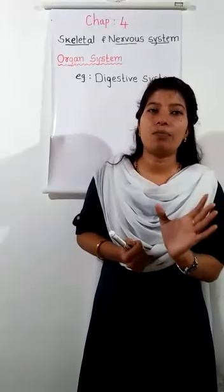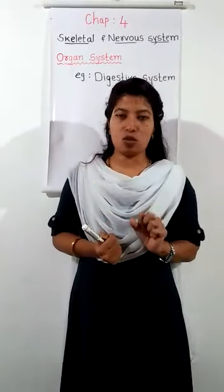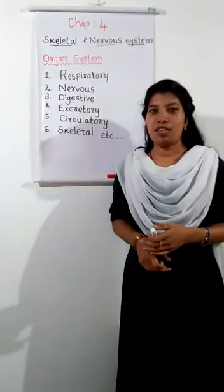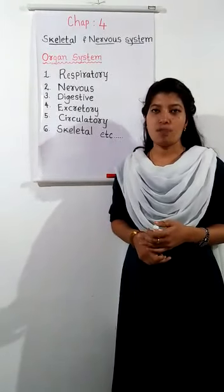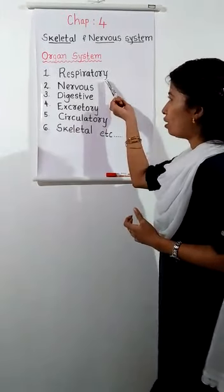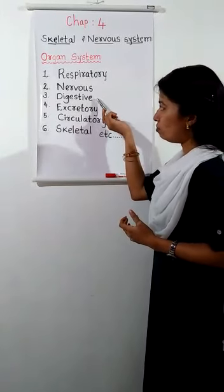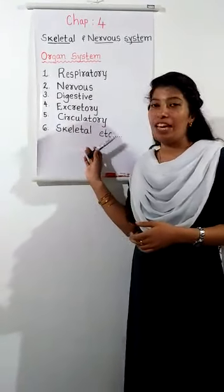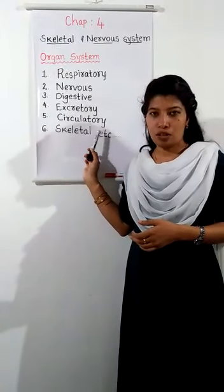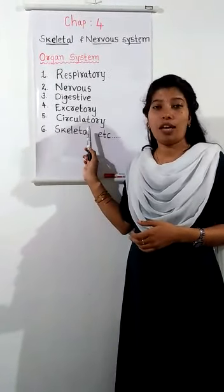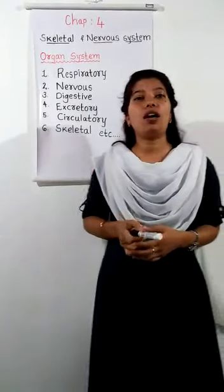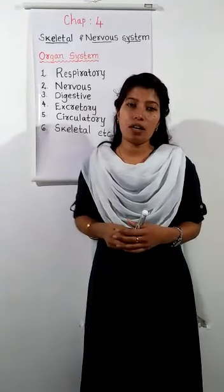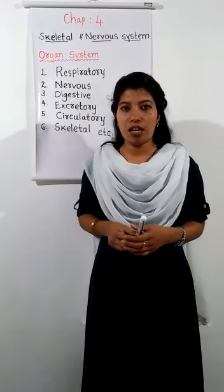So we can say that the human body is made up of all such organ systems. Some important organ systems in our body are: respiratory system, nervous system, digestive system, excretory system, circulatory system, skeletal system, etc. This is also given in our textbook on page number 34. Now let us move on to the main topic — the skeleton and nervous system — which we will discuss in detail.